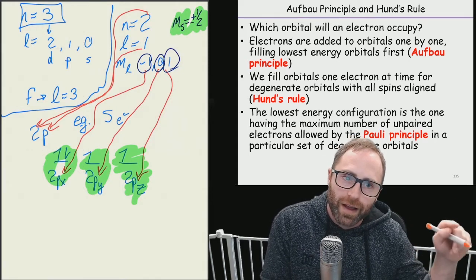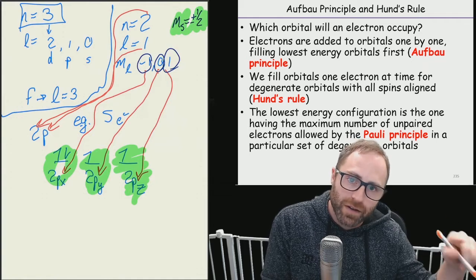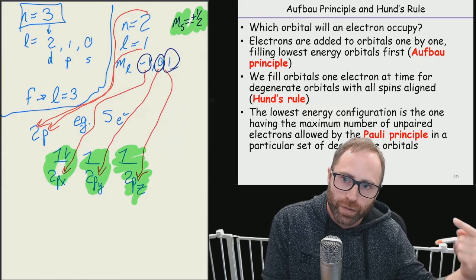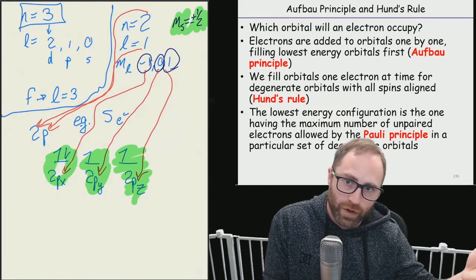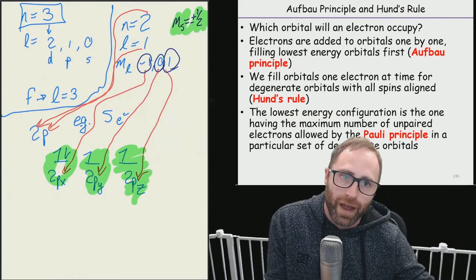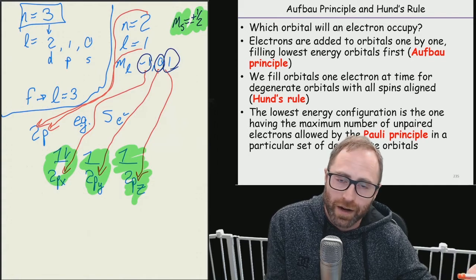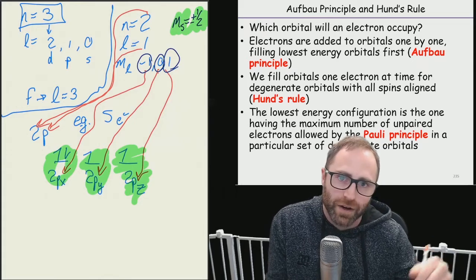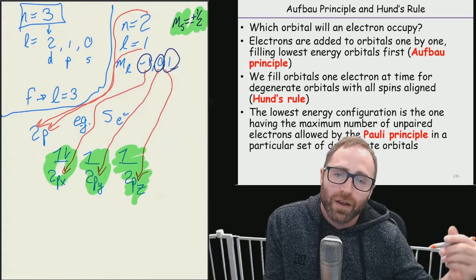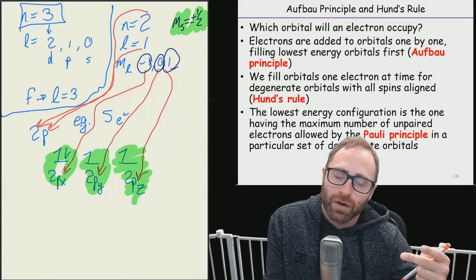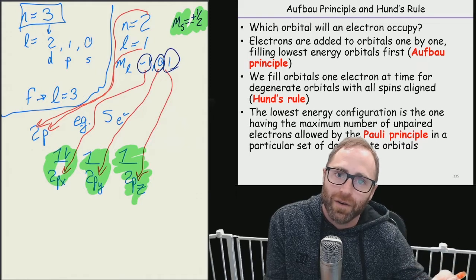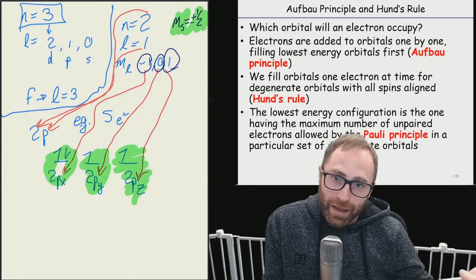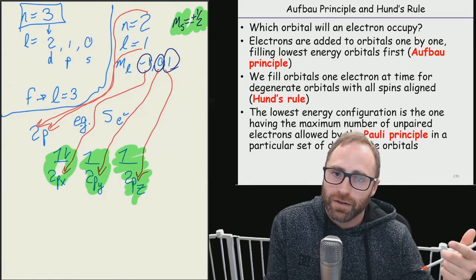Aufbau principle tells us you put in one at a time and you fill the lowest energy orbitals first. The p orbitals are all degenerate to start with, so we put an electron in the first one and we put an electron in the next one and we put an electron in the next one, and all their spins are up or in the same direction. That's Hund's rule. And the Pauli exclusion principle is then saying okay, well we can't put the next electron in also spin up, otherwise two electrons would have the exact same four quantum numbers. That's not allowed, so the next one that goes into the next available orbital has to be spin down.